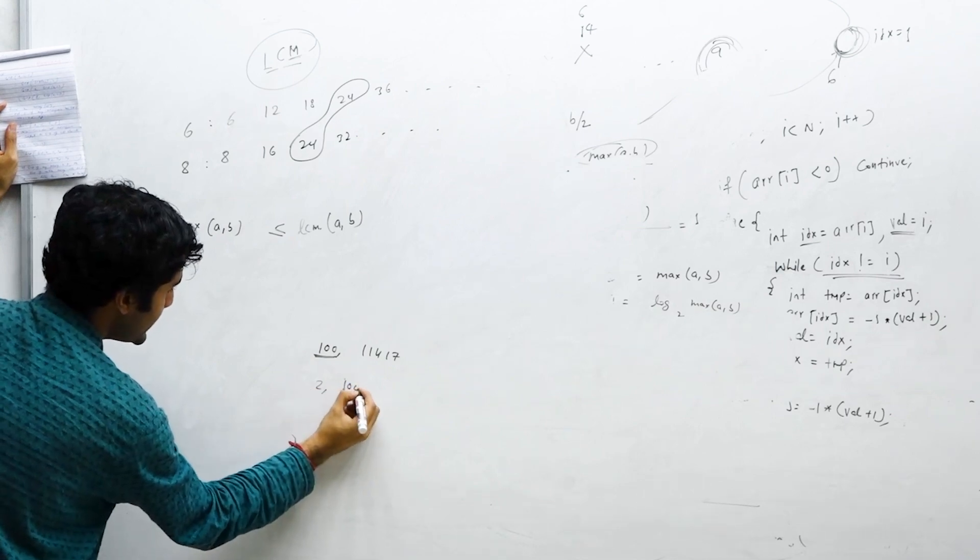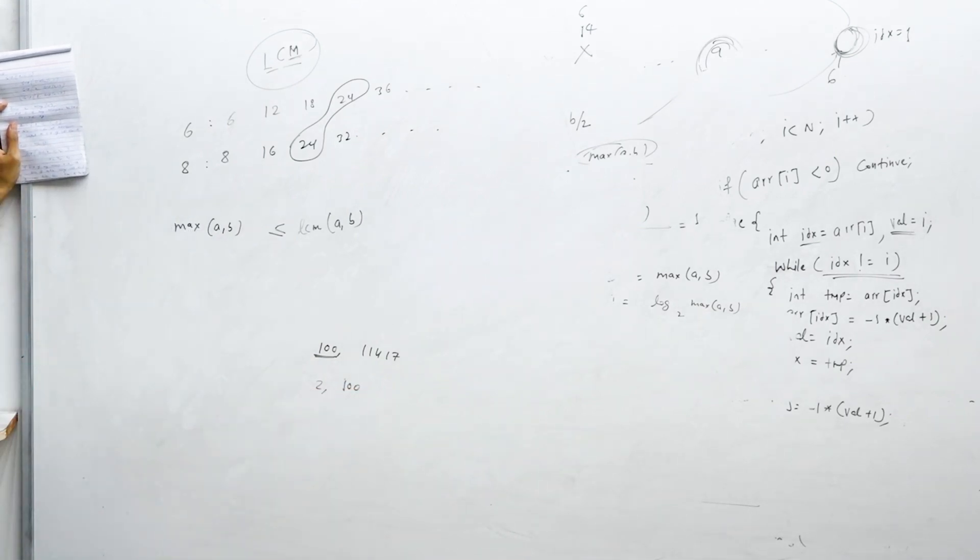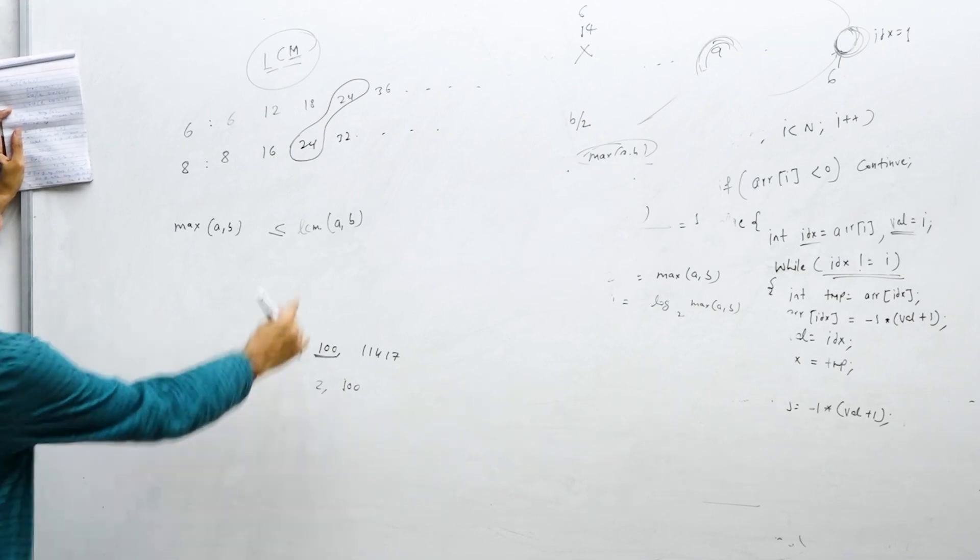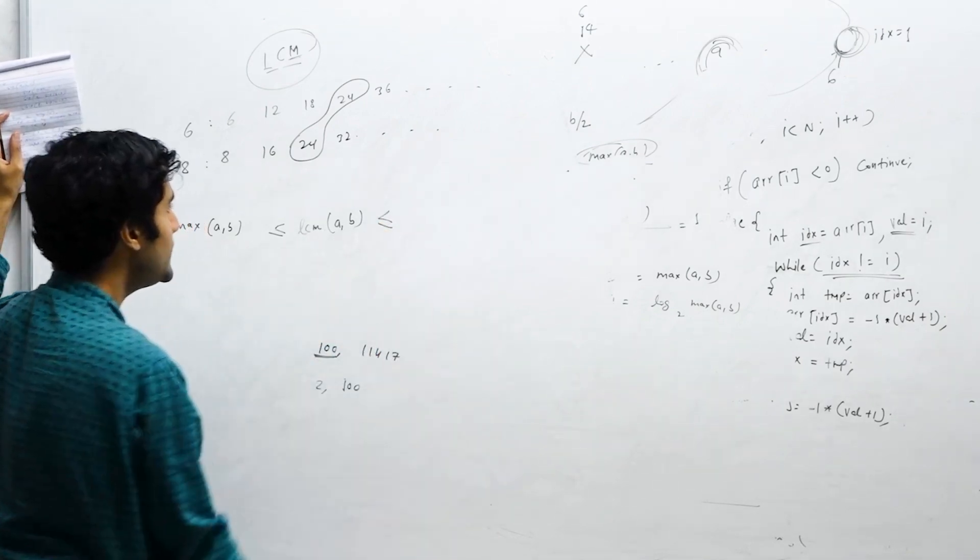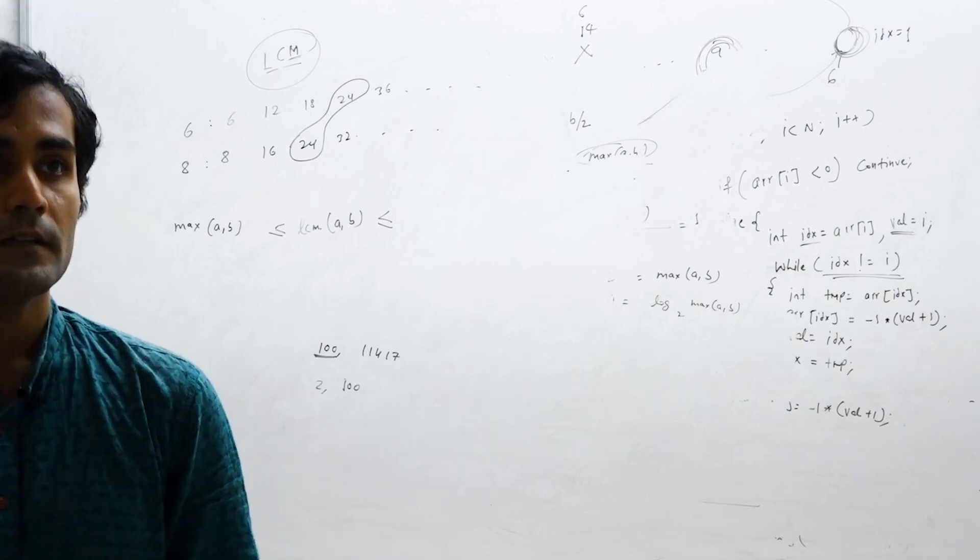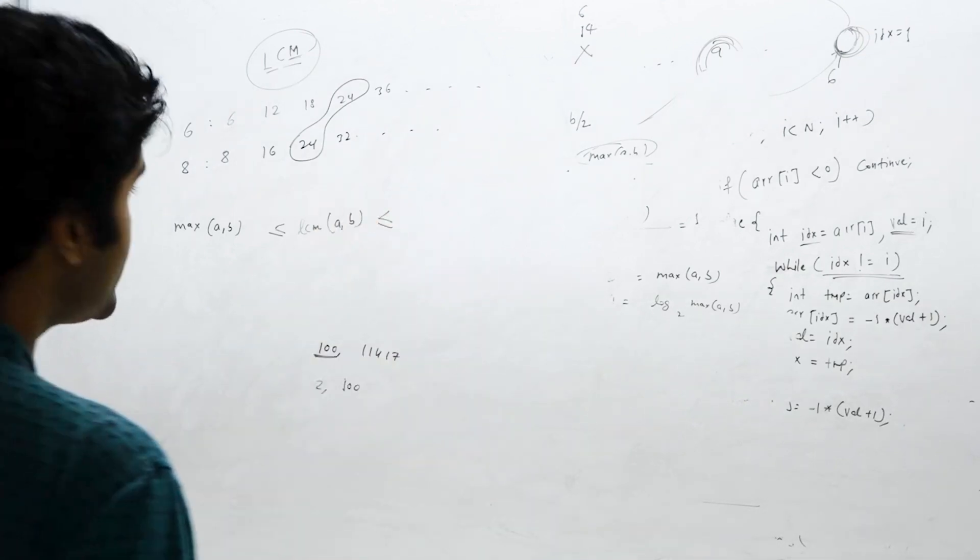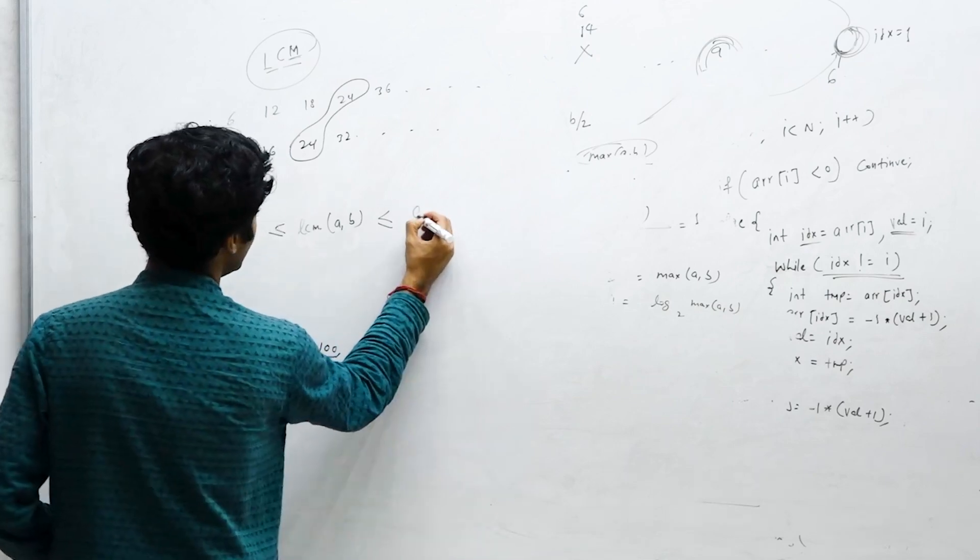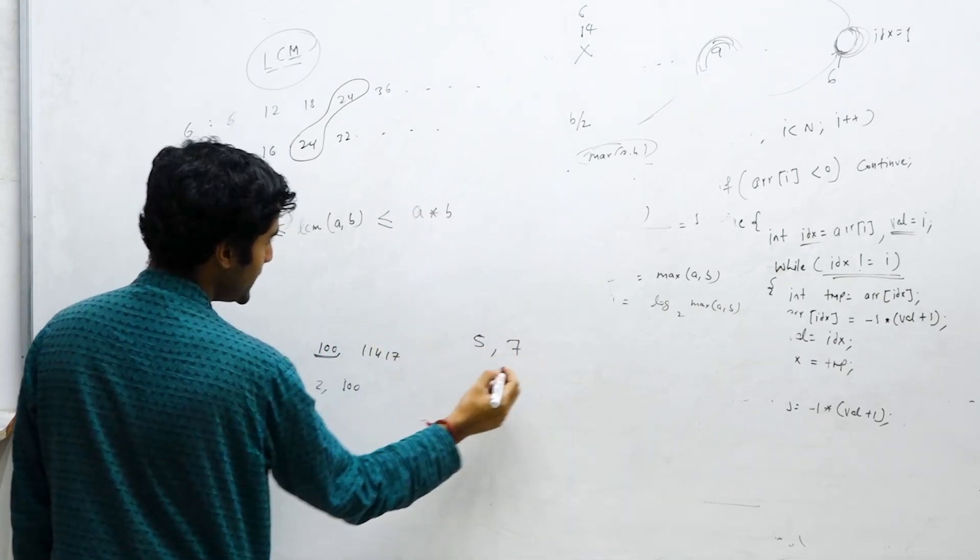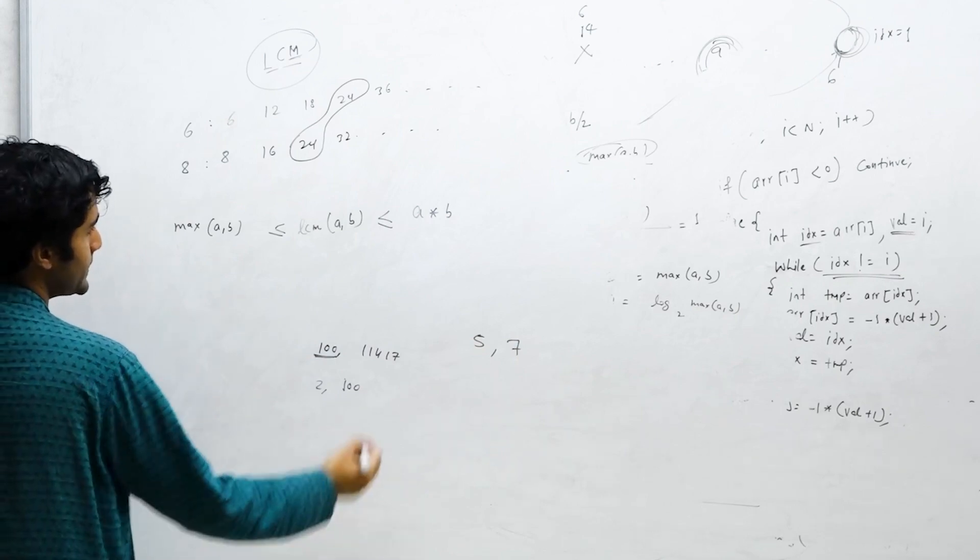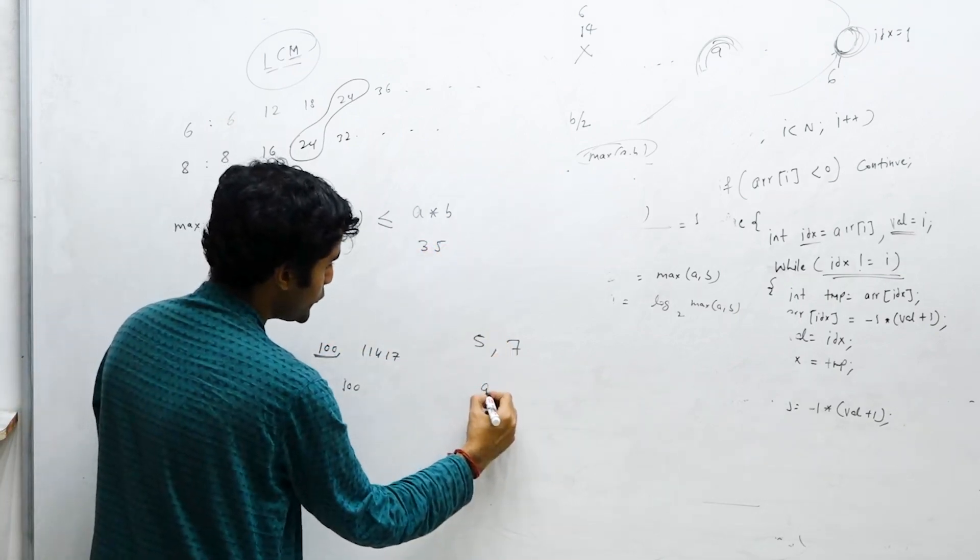But it can quite happen that you have two numbers like 2 and 100, and whatsoever is the maximum is actually the lowest common multiple. So lowest common multiple will vary from this thing. What will be the maximum value? The maximum value will be a into b.